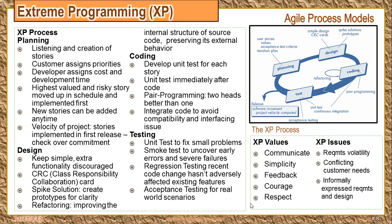Extreme Programming consists of three different things: first is the process with which it works, second is the values of the XP process, and third is what are the debates in XP. The XP process follows certain good practices, namely pair programming, test-driven programming, simplicity, refactoring, and integration.